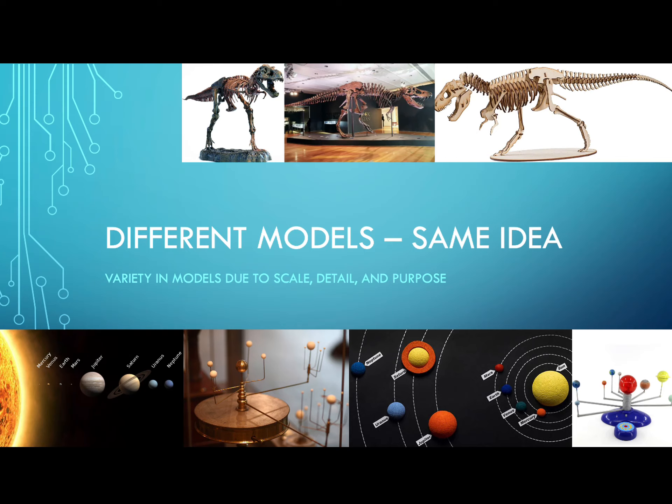So far we've talked about how models have some limitations, but during your learning have you noticed that there's oftentimes many different models for the same exact thing? Why do you think this might be?